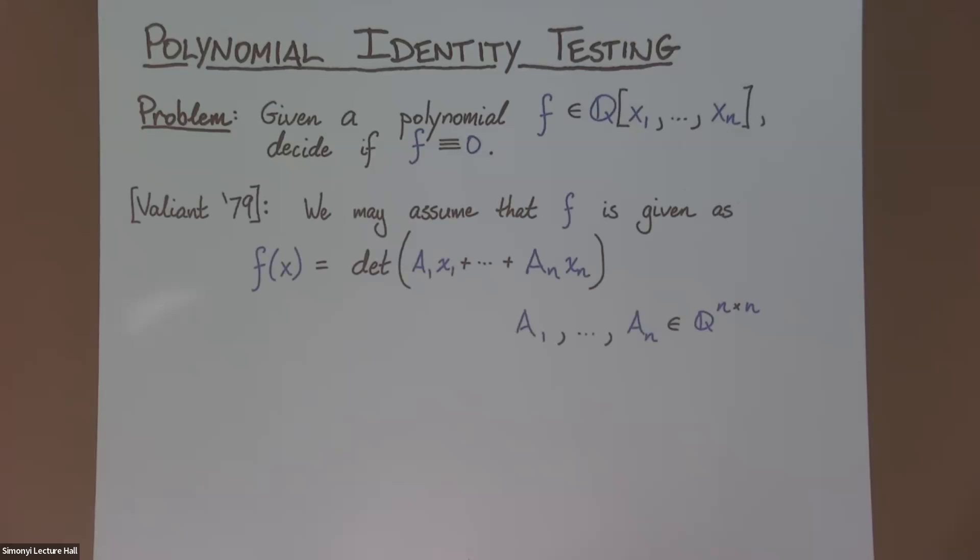So there's work of Valiant from the 70s that shows whatever succinct representation of a polynomial you might consider, you might as well consider the following one, where I give you the determinant of some symbolic matrix. So here are these A_i's. These are rational matrices. And I multiply each A_i by some fresh variable, X_i, and I take their sum. This is some matrix where every entry is a linear form in the variables. And I want to know, is its determinant the zero polynomial, or is it non-zero?